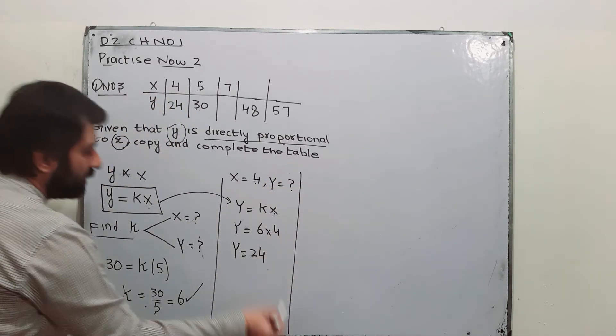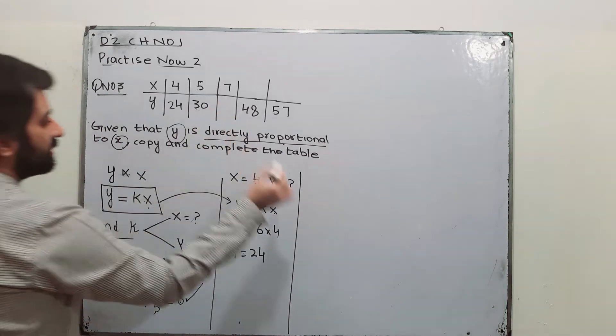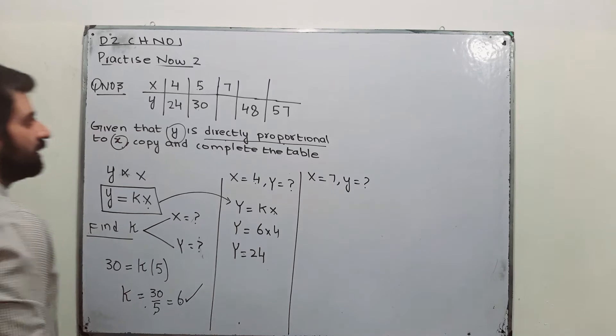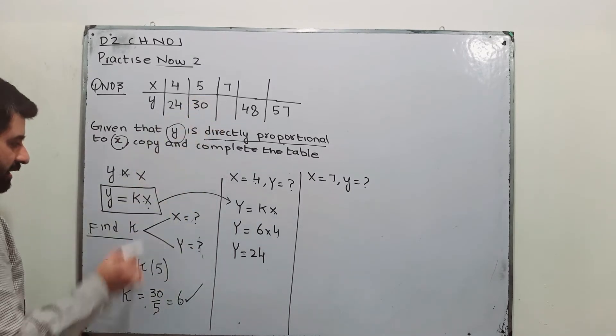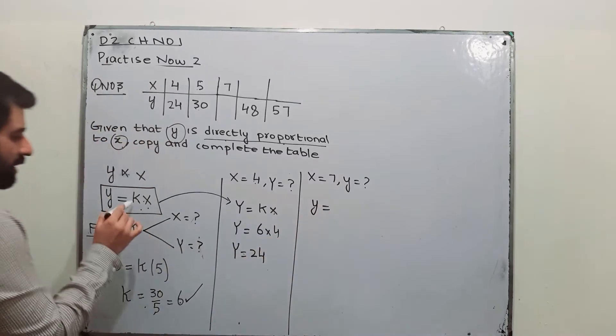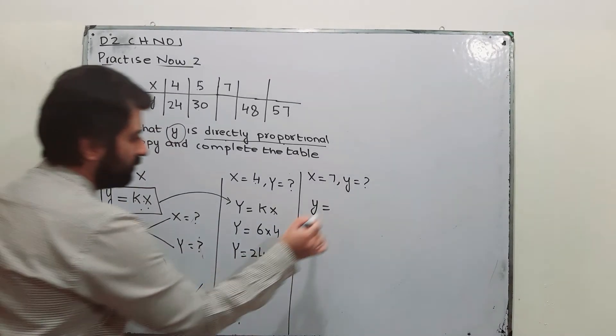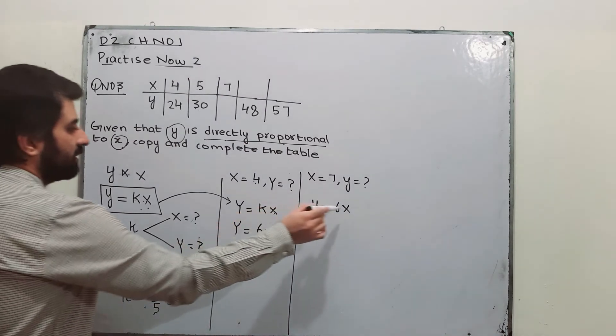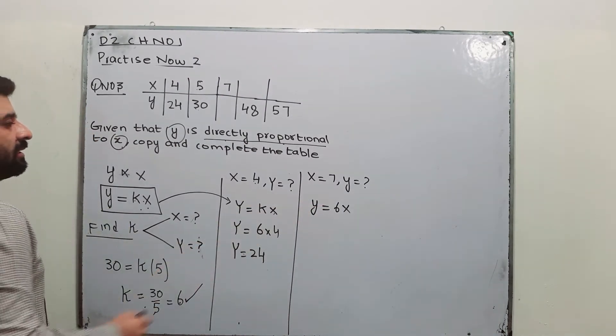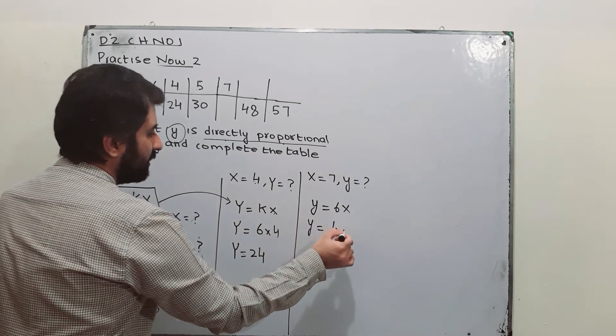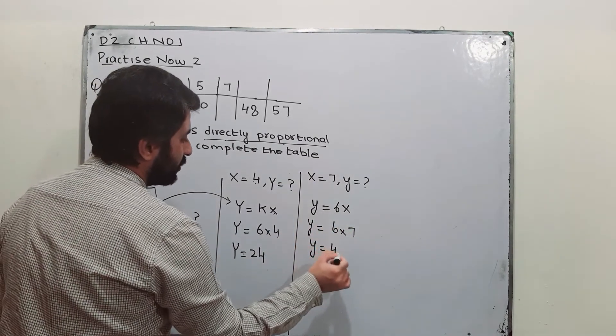Next one is X, you have to obtain this one. X is 7, find Y. Again write this equation. Y is equal to K, K is 6, X connecting X and Y. Put X as 7, Y is equal to 42.